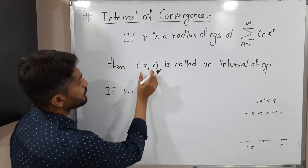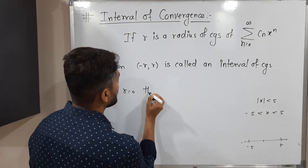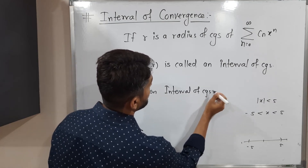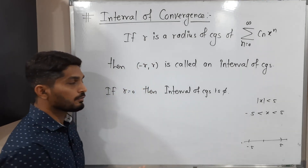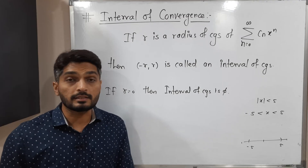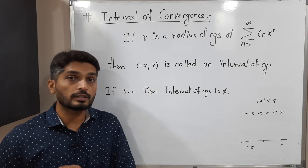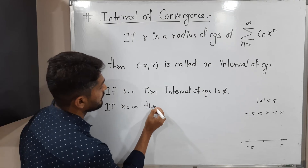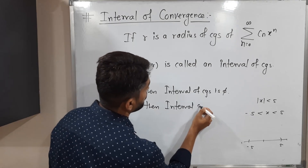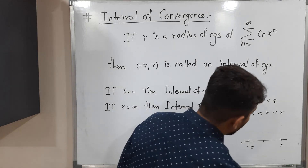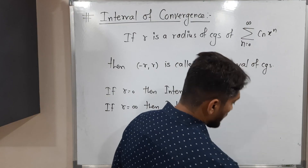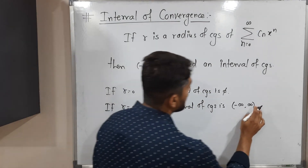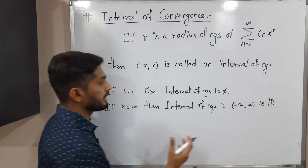Let us discuss a few cases. If r equals 0, then the interval of convergence is just {0}, meaning the power series does not converge for any real number — it does not converge anywhere. Second case: if r equals infinity, then the interval of convergence will be (minus infinity, infinity), which is nothing but the entire real line — the set of all real numbers.